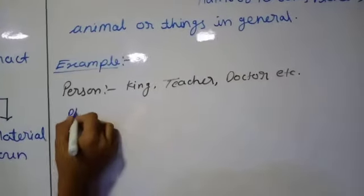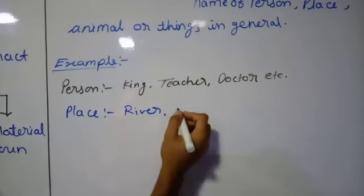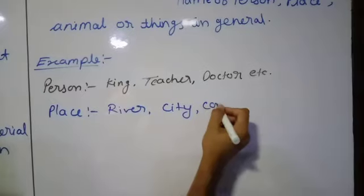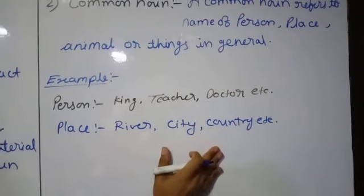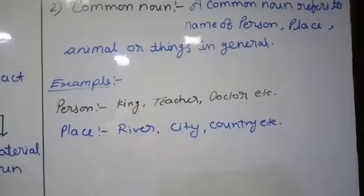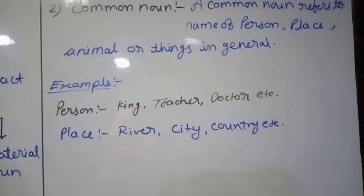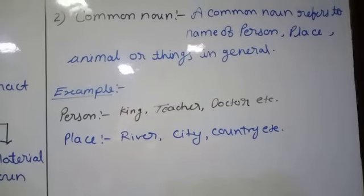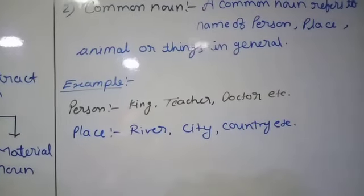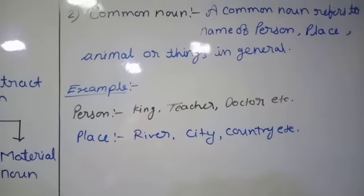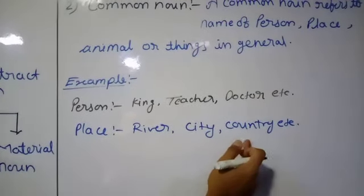For places — river, city, country, etc. — these are common names we use to denote various kinds of things. If I am talking about the river, there are various rivers in our country: Ganga, Yamuna, Brahmaputra, Krishna, Kaveri. If you are talking about a city, we have Mumbai, Nagpur, Delhi, Chandigarh, Hyderabad, Bangalore — we are not talking about any specific city. The same applies to countries and so on.